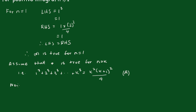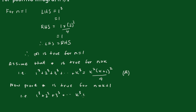Now we have to prove the statement is true for n equals k plus 1. That is, 1 cubed plus 2 cubed plus 3 cubed plus all the way up to k cubed plus k plus 1 cubed is equal to — replacing k with k plus 1 — k plus 1 all squared, times k plus 2, all squared, over 4. I'll call that statement p.